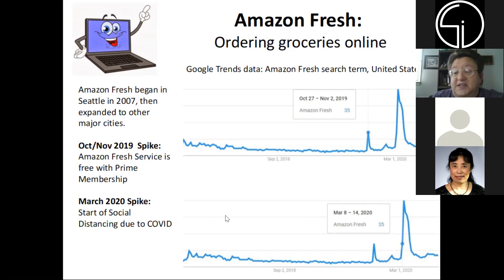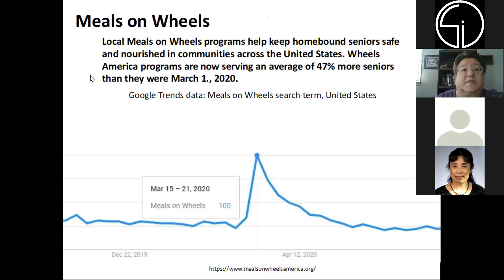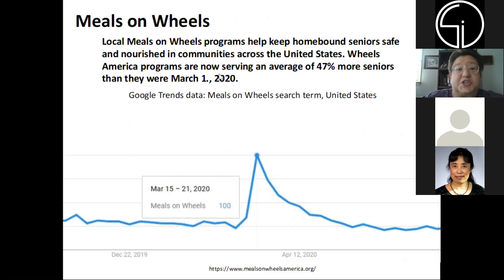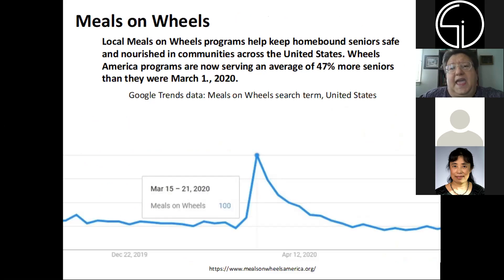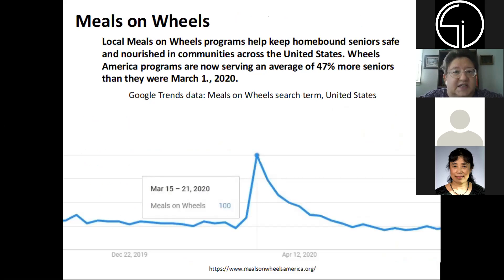This spike in early March corresponds to COVID-19. Another way that elders can get food if they want to stay at home and not go grocery shopping is Meals on Wheels — a service which provides hot meals, such as stew, to housebound elders. I saw on their website just recently that there's a 47% increase in meals served.